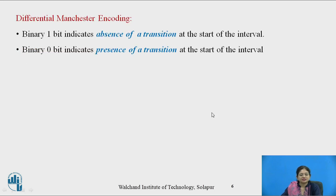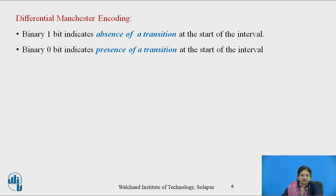Let us see the other encoding technique used by Ethernet: differential Manchester encoding. Here a binary one bit indicates the absence of a transition at the start of the interval, and a binary zero bit indicates the presence of a transition at the start of the interval.